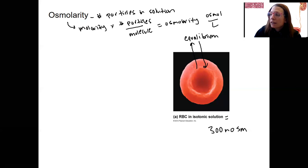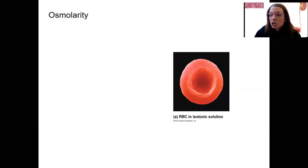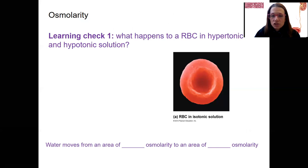I'm going to erase my text here so I can ask you a learning check that relies on some previous knowledge. What happens to a red blood cell in hypotonic and hypertonic solutions and then how does water move depending on osmolarity?